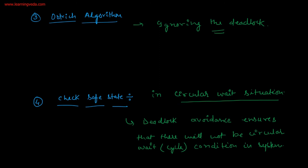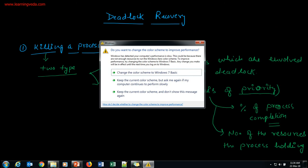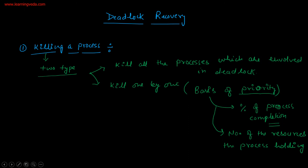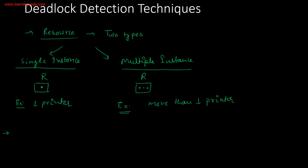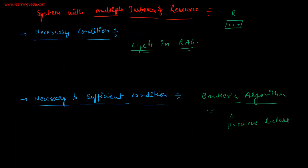These are the deadlock recovery schemes, and we have also seen the deadlock detection schemes. This is all for this lecture - the deadlock chapter is now over. You can practice the deadlock avoidance algorithm and Banker's algorithm examples, because in every exam they will give this type of questions. Thank you for the lecture.